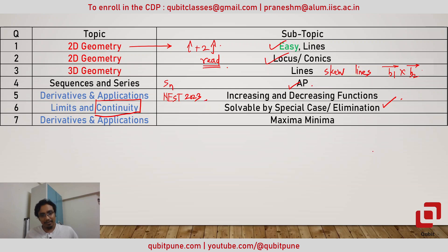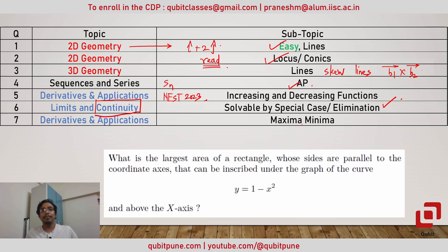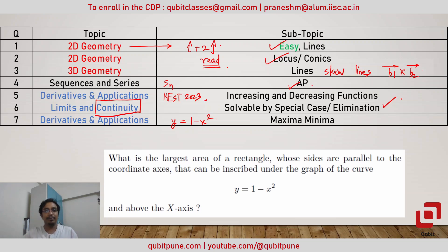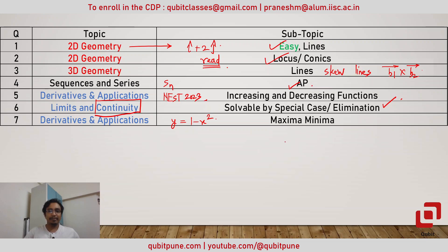In question number seven, based on the maximum and minimum of a function, I think this problem was also very easy. There was a parabola, and we were asked to determine the maximum area of the rectangle that the parabola bounds from three directions, with the x-axis at the bottom. Pretty basic question.